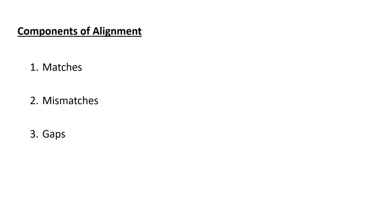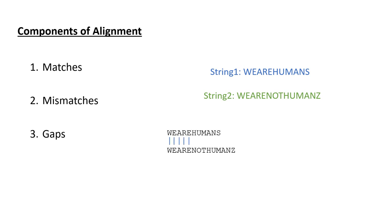Let's understand matches, mismatches, and gaps using an example. Suppose we have two strings: string one is 'we are humans' and string two is 'we are not humans.' When we align these two sequences end to end, the characters 'we are' match with the corresponding characters in the other string — those regions align with each other. The red rectangle shows characters that are not aligning or not matching — those are mismatches. Matches are characters that are the same in both strings; mismatches are those that are not the same.